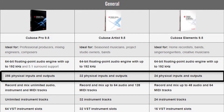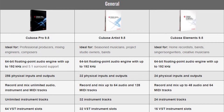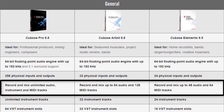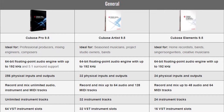Cubase Elements also allows 24 physical inputs and outputs — more than enough for any beginner getting started with music production. You can record and mix up to 48 audio and 64 MIDI tracks. If you run out of audio tracks, you can bounce multiple elements — say 10 drum tracks — down into one stereo file and free up space, just like the old days with 4-track recorders.